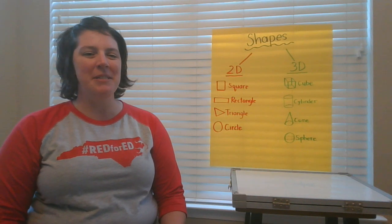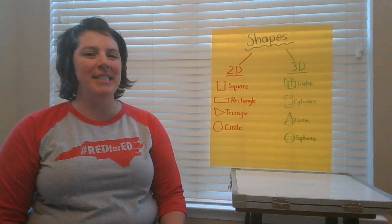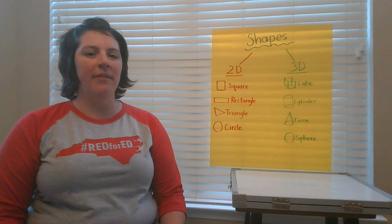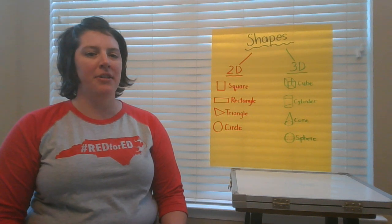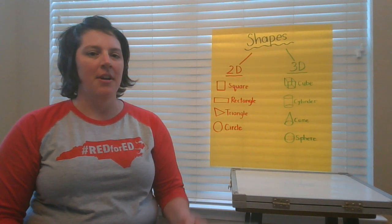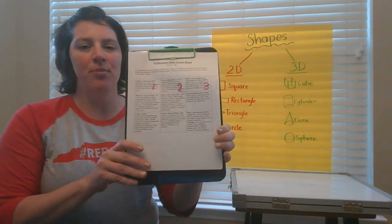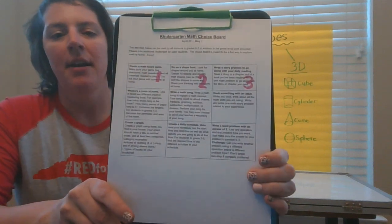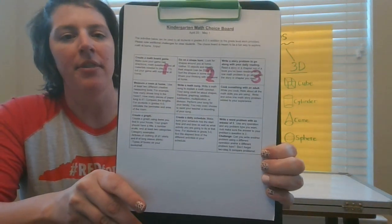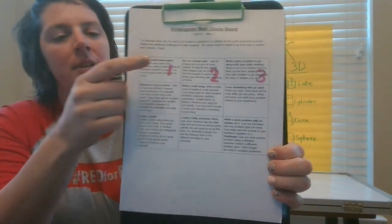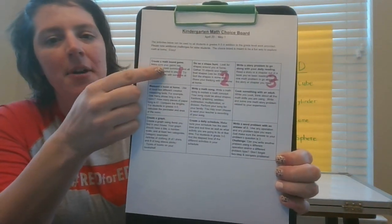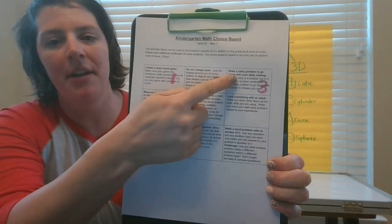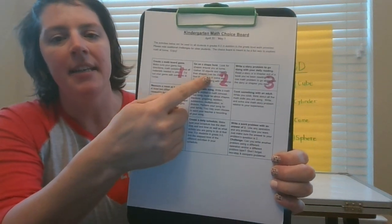Hi kindergarten friends, it's Mrs. McCarver, and today I'm going to help you with one of the activities on your math choice board. This is the math choice board that came in your packet in the mail. I took a marker and put a number on the first row — activities 1, 2, and 3. Today I'm going to help you with activity 2.